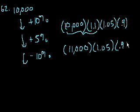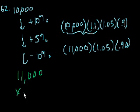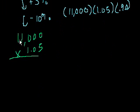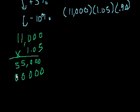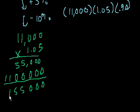11,000, and we have to multiply that times 1.05. Let's actually do it. 11,000 times 1.05. So 5 times 11,000 is 55,000, and then 1 times 11,000 is 11,000. You add them up and we have 2 digits behind the decimal point.